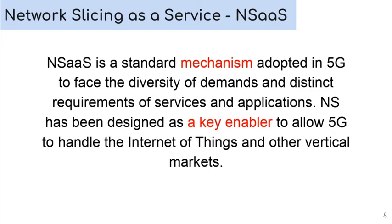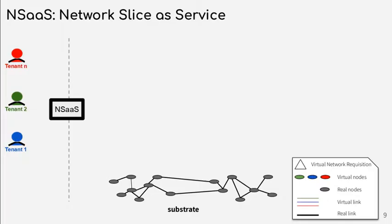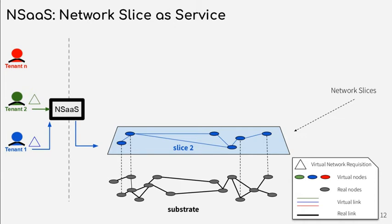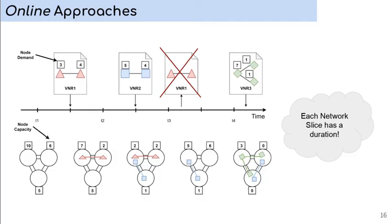Network slicing has been designed as a key enabler to allow 5G to handle the Internet of Things and other vertical markets. In this animation, we can see the process of each tenant submitting their network slice requests and the provider serving them. The illustration shows that all slices share the same infrastructure. However, they are isolated and work separately. In our work and real scenarios, the requisitions arrive during the time. Therefore, the available resources change over time.